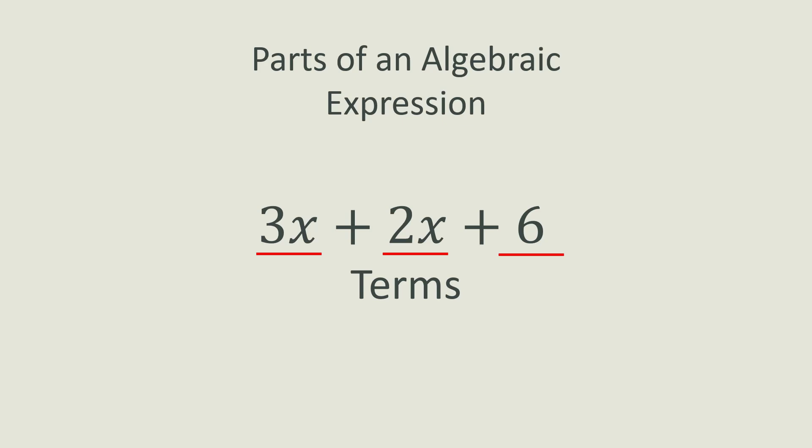There are also different parts of terms. Let's look at 3x and 2x. Both of them have a number that is multiplied by x. These numbers are called coefficients.